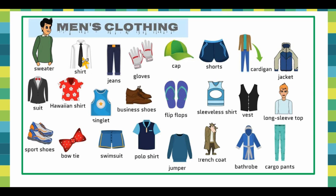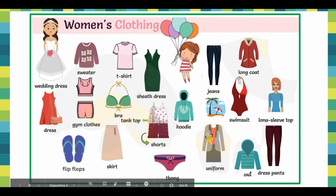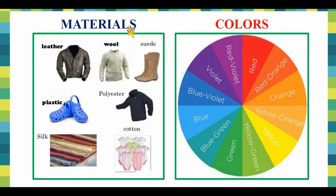First, you will find some men's clothing vocabulary: a sweater, a shirt, jeans, gloves, cap, shorts, business shoes, and bow tie. Women's clothing vocabulary includes: wedding dress, a sweater, a pink t-shirt, a green dress, a dress skirt, and a uniform. Also, in the PowerPoint, you will find materials and some colors.